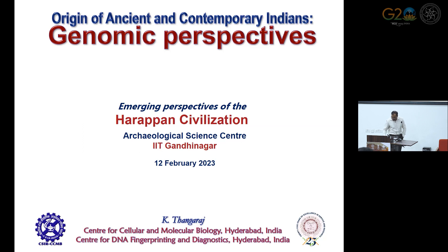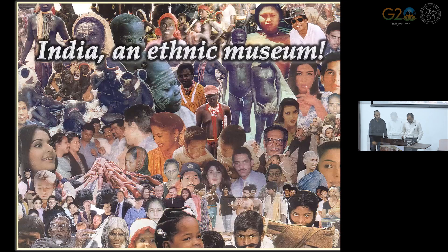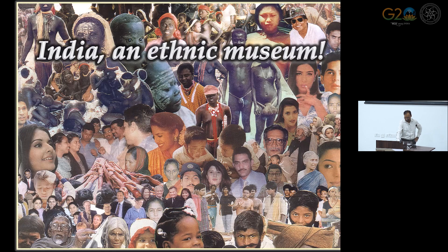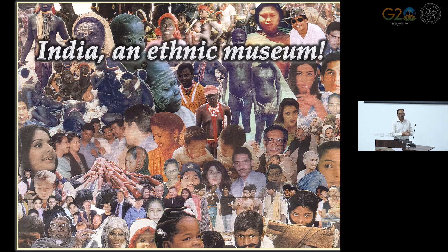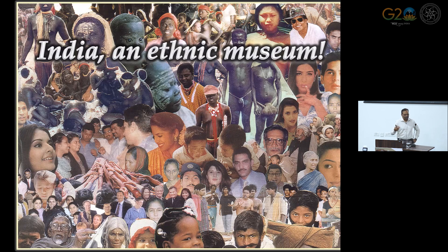When we talk about any population study, there is no other place than India because of the complexity in terms of diversity existing in the Indian subcontinent. It is not an exaggeration to say that India is an ethnic museum because we have a collection of a large number of population groups. There are groups who typically look like Africans, groups that typically look like Europeans, groups that look like Southeast Asians, and groups which are very unique to India and do not look like any population outside India.